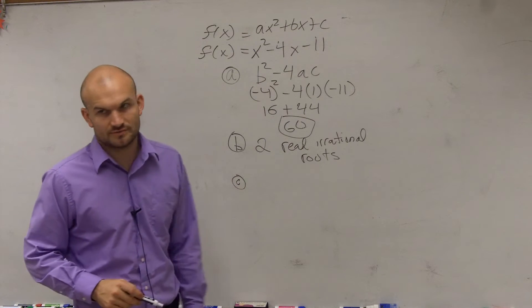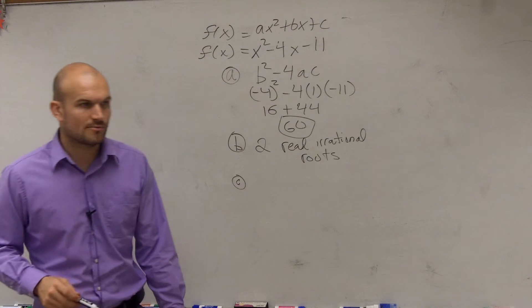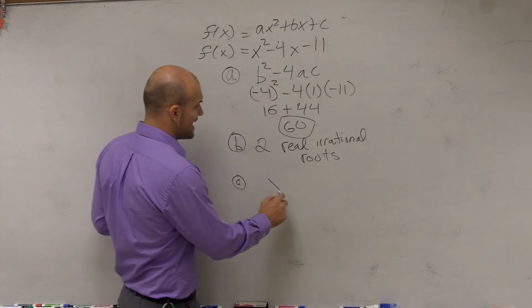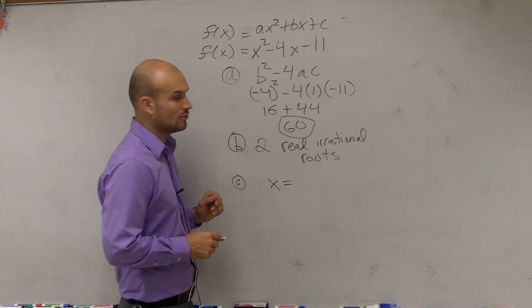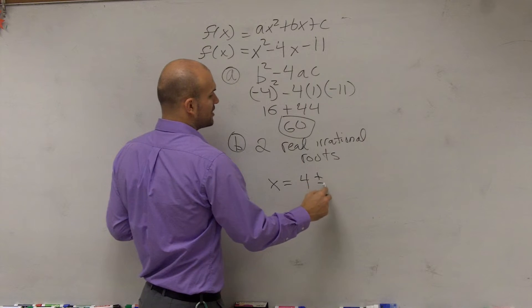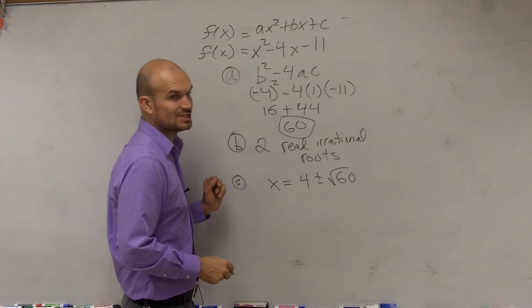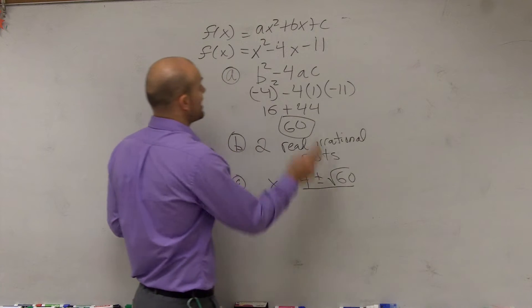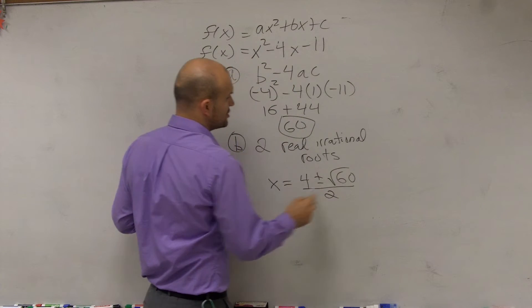I said solve. So remember, solving says your X equals opposite of B, which is now positive 4, plus or minus the square root of your discriminant, which is 60, all divided by 2 times A, which in this case is 2.